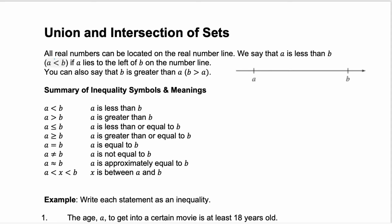All real numbers can be located on a real number line. Here we have the number a and the number b. We can say that a is less than b, or use the inequality notation a < b, if a lies to the left of b on that number line. You could also say that b is greater than a.